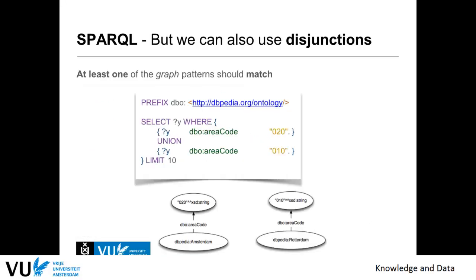By default we only retrieve conjunctions, but we might also want to retrieve disjunctions — getting multiple result sets that might be unrelated. We use a UNION to combine results after they are retrieved. For example, we look for variable ?Y which has area code 020, unioned with the same variable having area code 010. As a result, we get at least Amsterdam for area code 020, and Rotterdam for area code 010.